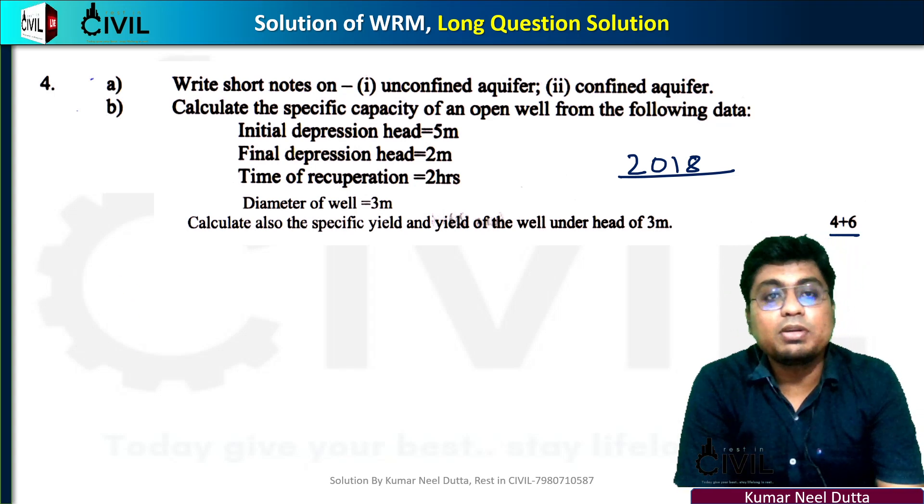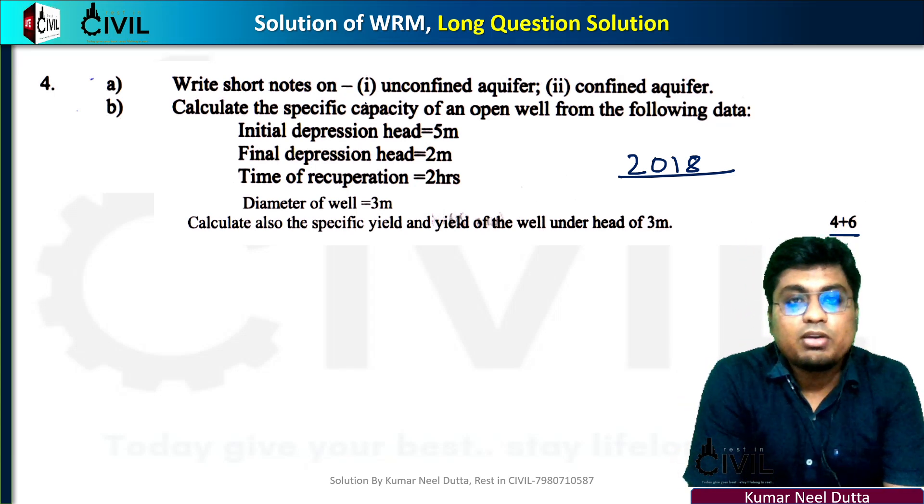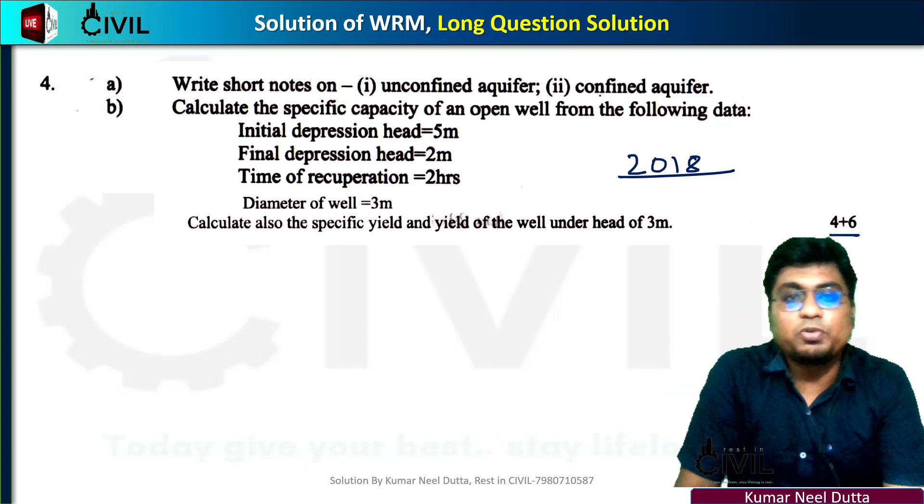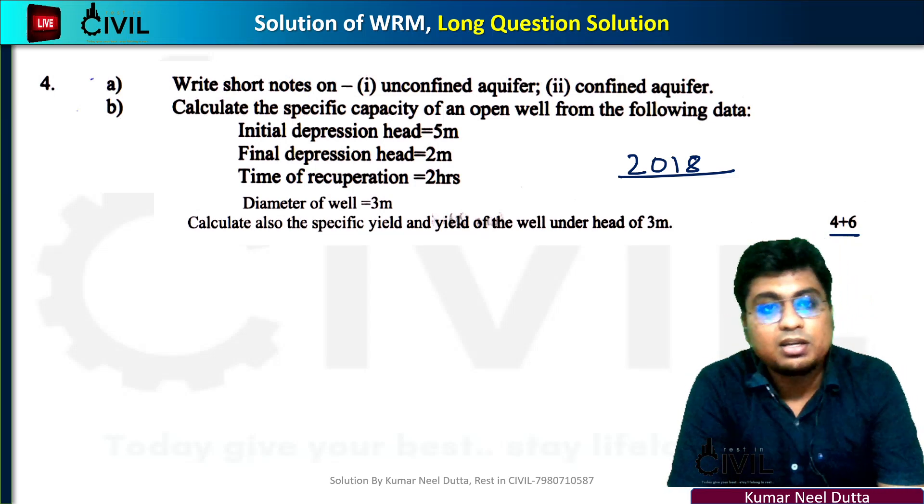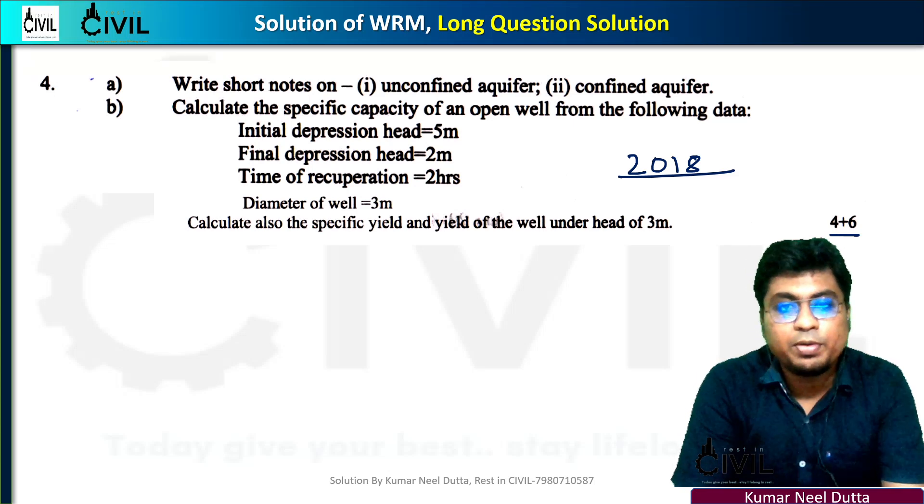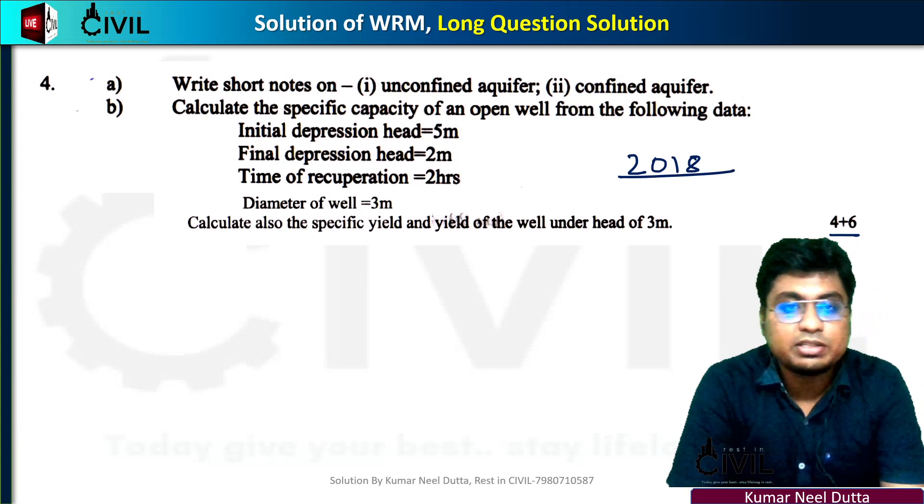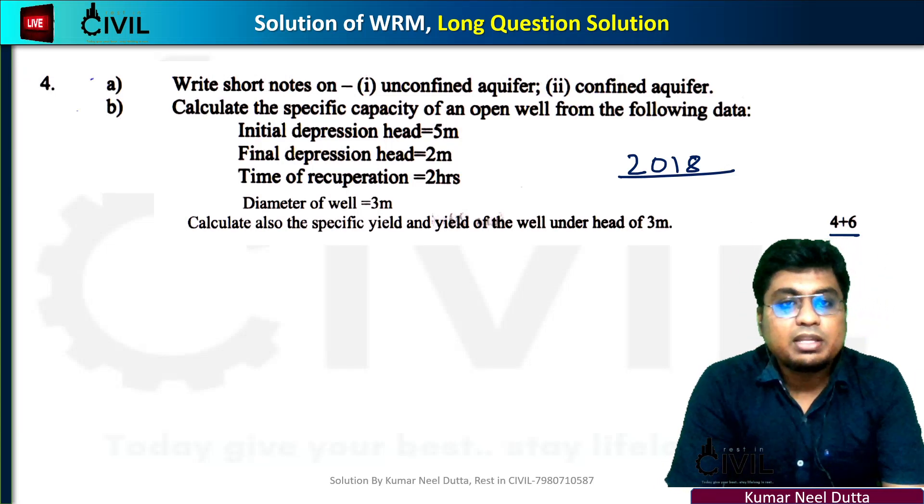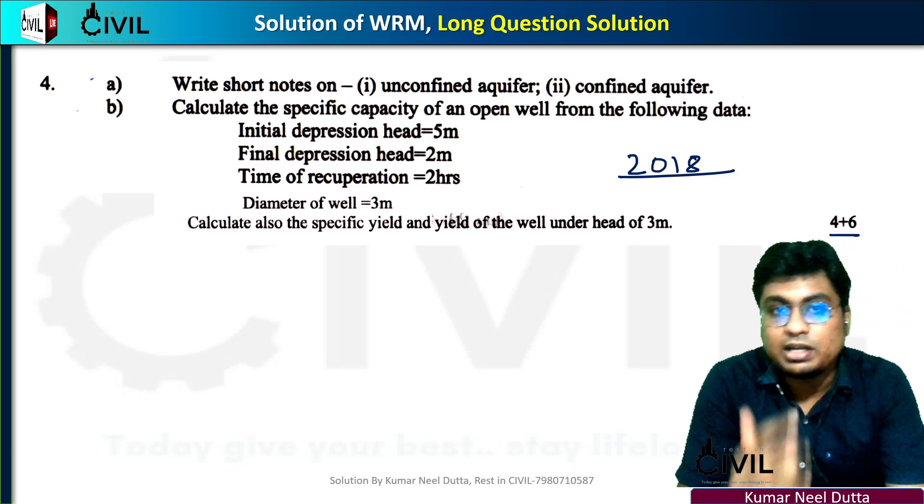Calculate the specific capacity of an open well. The problem involves an unconfined aquifer with initial depression head 5 meters, final depression head 2 meters, recovery time 2 hours, and diameter of the well 3 meters. We need to calculate specific capacity, specific yield, and yield of the well under head of 3 meters.